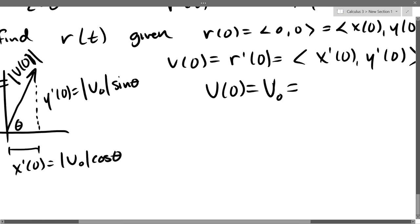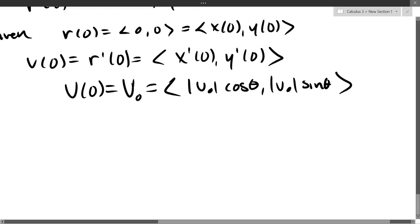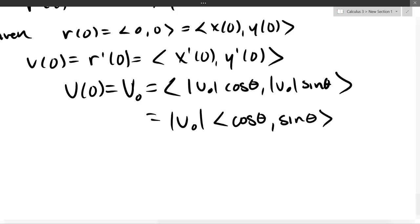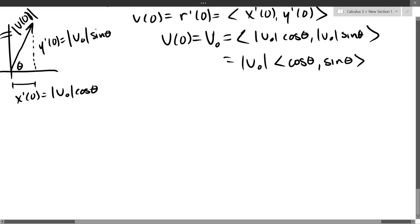So v0 is the magnitude v0 cos theta, magnitude v0 sine theta. And, of course, you can take the scalar out. I wonder how many people don't know what velocity is and only think they do. I bet a lot of people. So we're going to assume the only force acting is gravity.